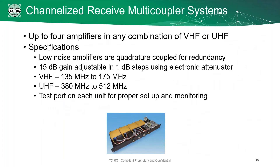Each RMC deck can have up to four amplifiers on it, so if we're doing six amplifiers like the previous system, we would need two decks. These amplifiers can be any combination of VHF or UHF, which lets you add on as many frequencies as you need. Again they're low-noise amplifiers, quad-coupled for redundancy, and we still have 15 dB of gain adjustable in 1 dB increments. Each amplifier has its own test port for proper setup and monitoring, and each amplifier operates independently of the other amplifiers on the deck.